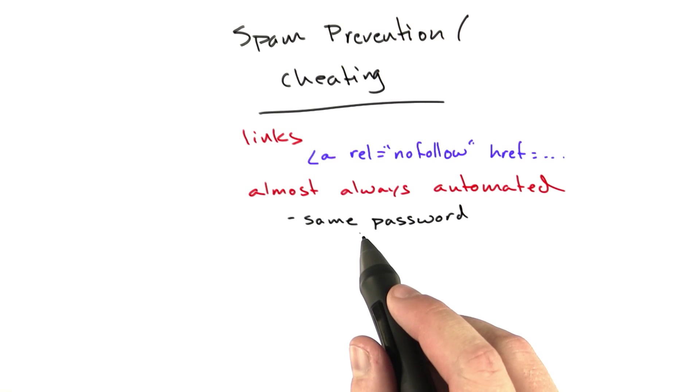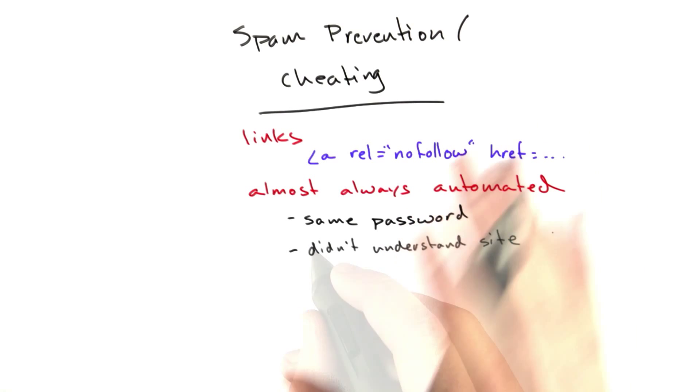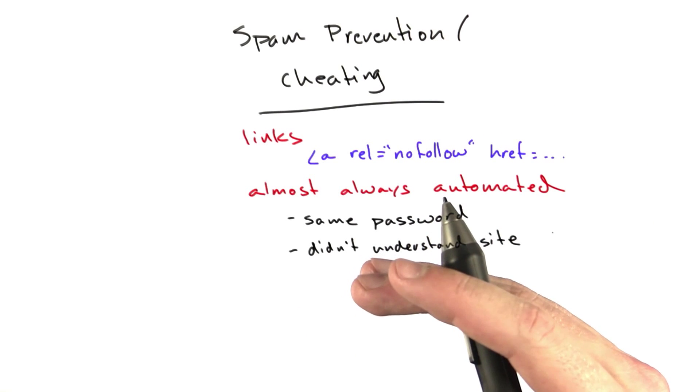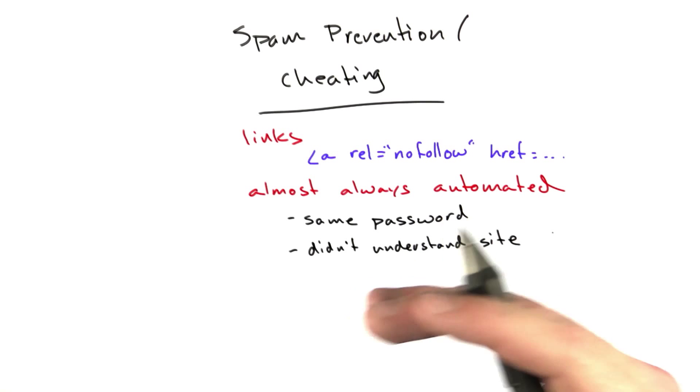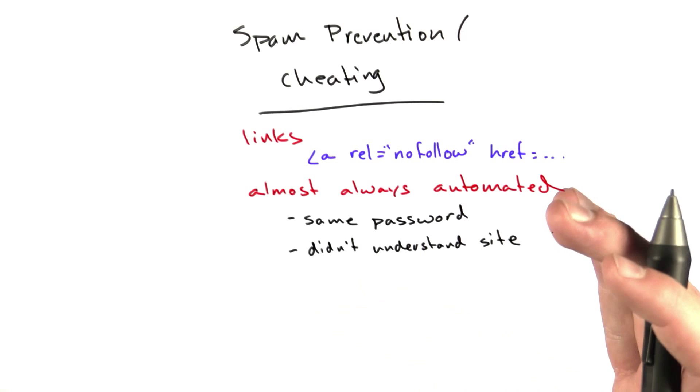Eventually we started hashing passwords and we lost that ability, but we had learned some other tricks along the way. One is that the users didn't understand the site. They would always submit a link and then comment on their own link. And users, legitimate users, rarely commented on their own link as the first comment. So we would just look for links that had one comment by the same author and mark it as spam.